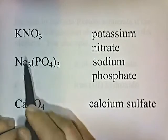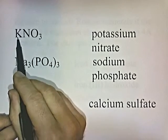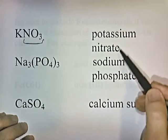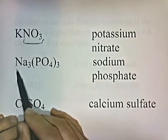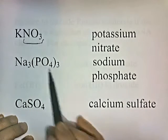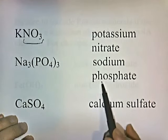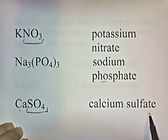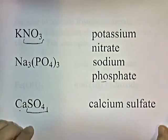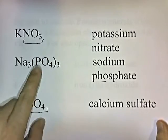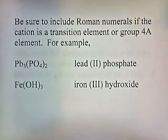Here are the names: K is potassium, NO3 is nitrate — potassium nitrate. Na is sodium, PO4 is phosphate. Ca is calcium, SO4 is sulfate. If you don't have them memorized, look them up on a polyatomic ion chart.